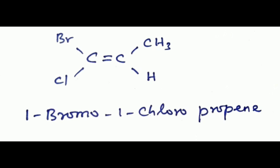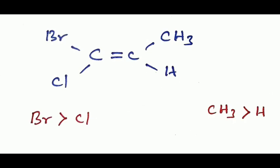In the E-Z system, the two groups attached to each carbon of the double bond are arranged in order of priority. That means the group with higher atomic number has high priority, and lower atomic number has low priority.